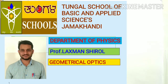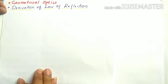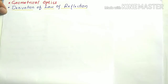Hi dear students, this is Lakshman Shiro. In last class we have seen Fermat's Principle and the laws of Fermat's Principle. Fermat's Principle is nothing but light travels between two points along the path that requires the least time as compared to the nearby paths.